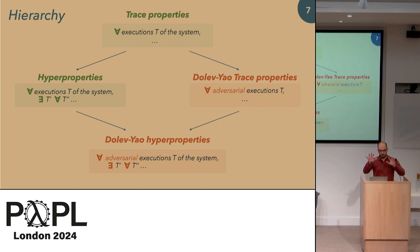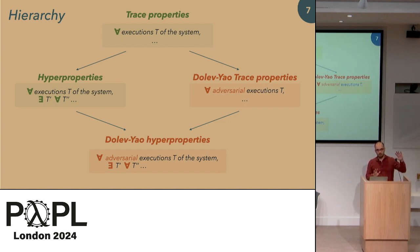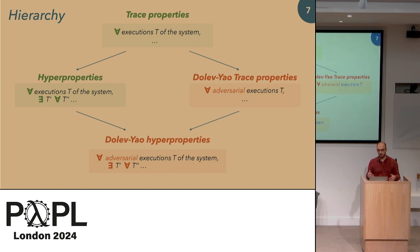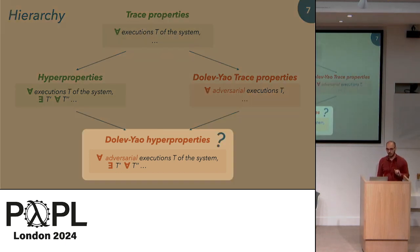Looking at the global picture, there is a hierarchy of properties. First, there is the distinction between trace properties and hyperproperties, based on the number of quantifications over executions. Second, there is the distinction between green boxes — normal program verification about the behavior of concurrent programs — and orange boxes, which are about studying programs in environments that cannot be controlled. This adds another layer of undecidability. Tools and results exist for the top three boxes, but the last one — Dolev-Yao hyperproperties — has been mainly left out, with essentially no work in the literature. We wanted to propose theoretical foundations by providing decidability and complexity results for this class.